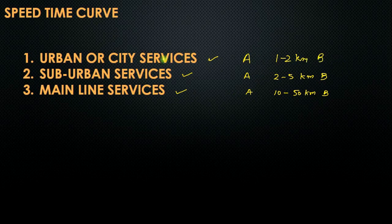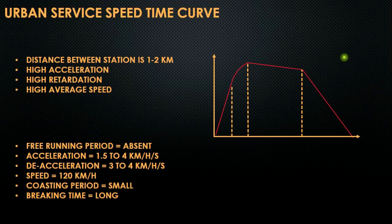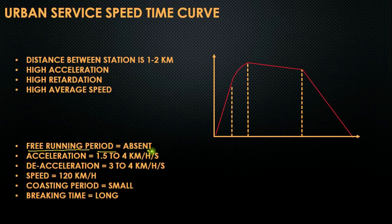Let us see what will be the speed-time curve for urban city services. The urban city services speed-time curve will look something like this. In urban city services, because the distance is very small, we cannot have a free running period. So the free running period in them is absent.